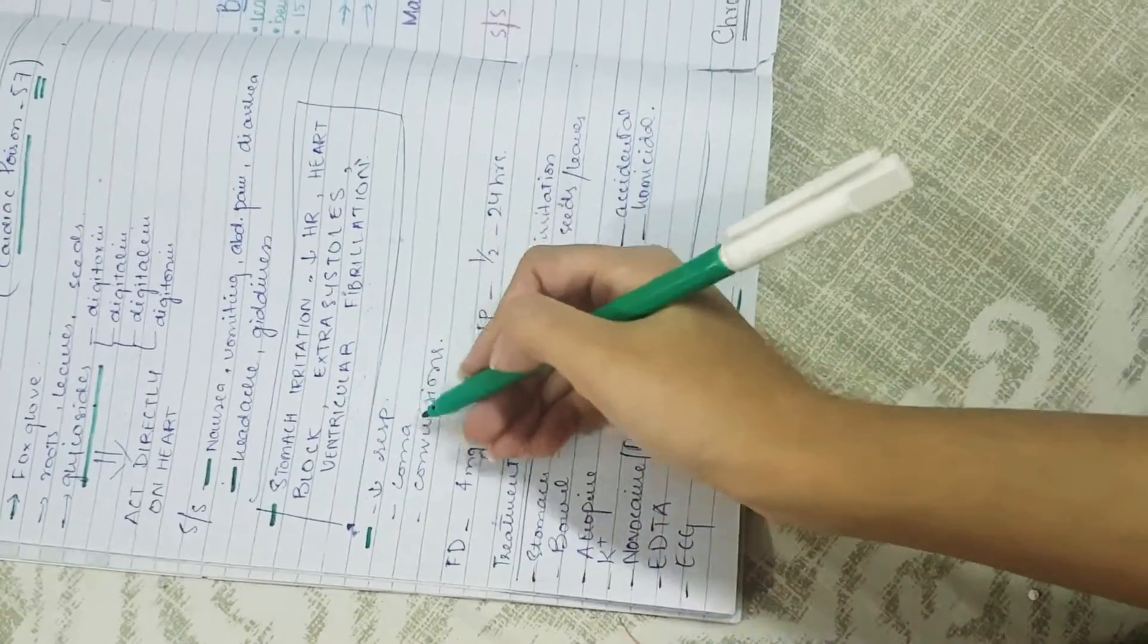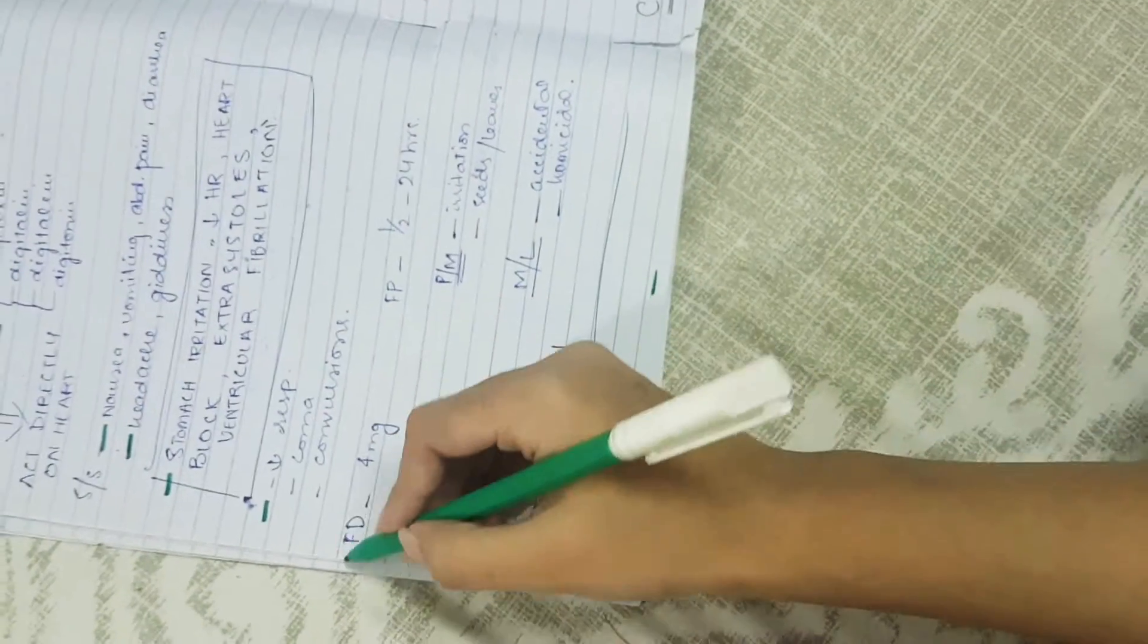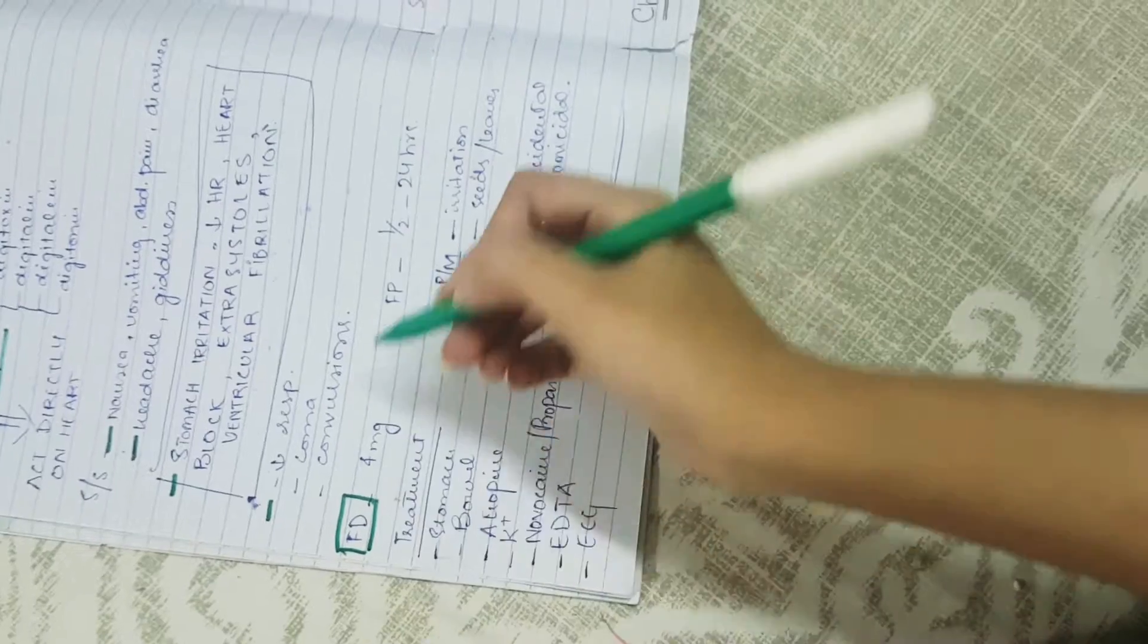The fourth group includes decreased respiration which can lead to coma and convulsions. The fatal dose of this compound is about 4 mg.